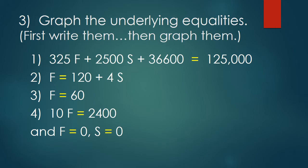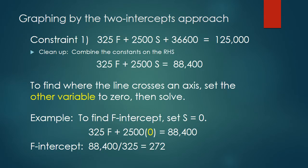So let's start with the first constraint. Now, all of our constraints are going to be linear constraints, and that means that when we graph them, they will all graph as straight lines. You can figure out a straight line if you can figure out two points on it, so the approach that I'm going to use to graph these lines is what's called the two-intercepts approach, and it trades on a very simple fact. If you look at all of the points on the vertical axis, the S-axis, you'll find that they all have F equal to zero. If you look at all the points on the F-axis, they all have S equal to zero. So if I want to find out where my line crosses one of the axes, I can simply set the other variable to zero and then solve for the variable that's left.